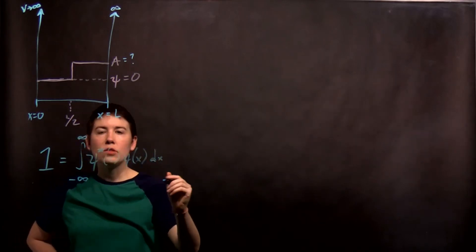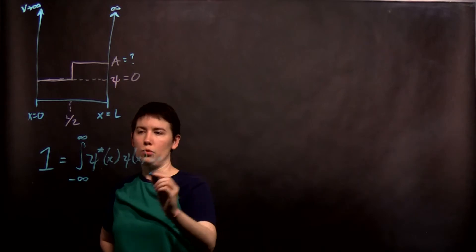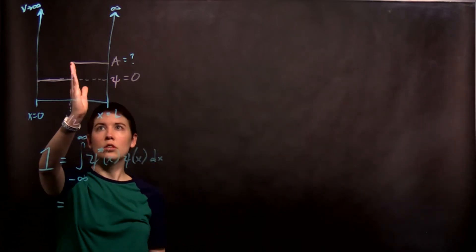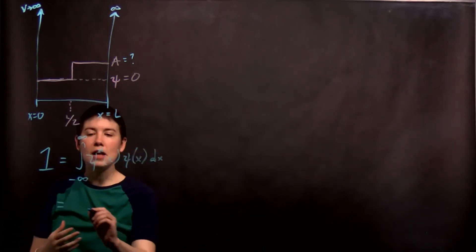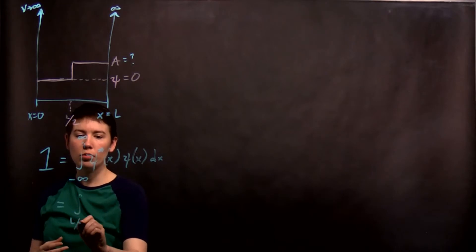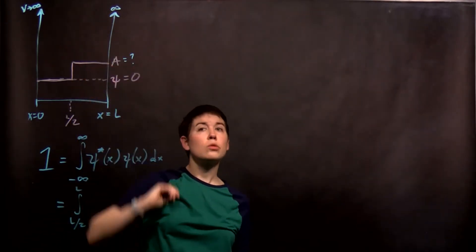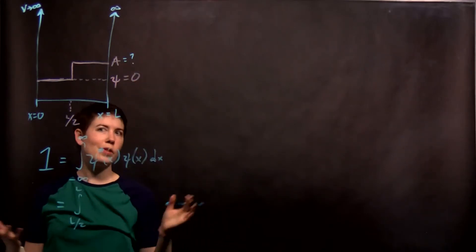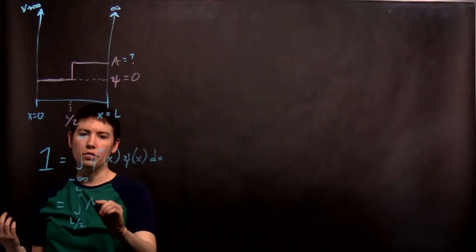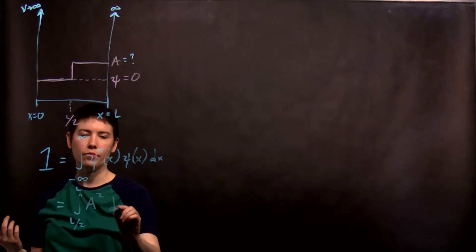Right? And so that's going to be equal to, in this case, zero everywhere that is not L over two to L. And notice that we've said our wave function is just equal to A between these. So I can say, and we'll assume that A is positive and real so that I get to write that as A squared dx.